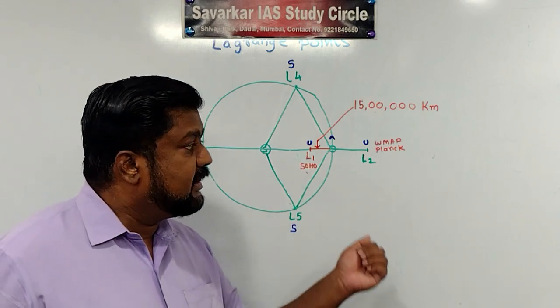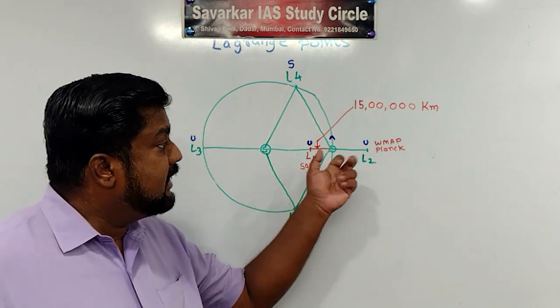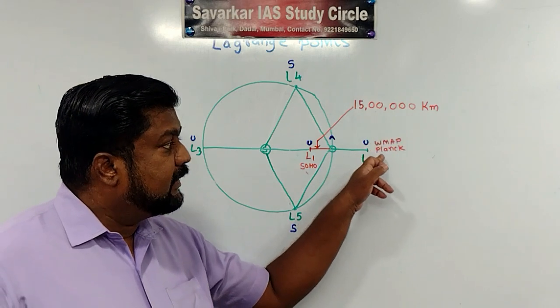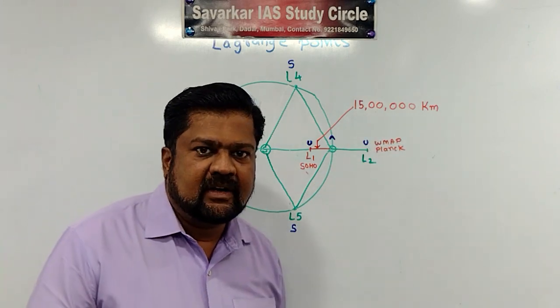So SOHO is name of their mission symbolically. Whereas on L2 also, WMAP was there. And now Planck is there.